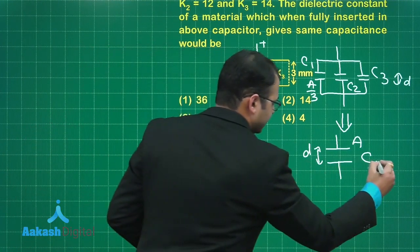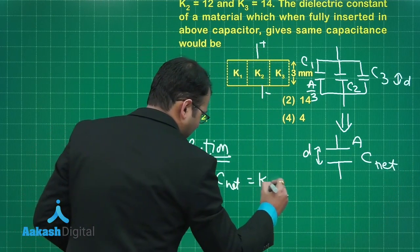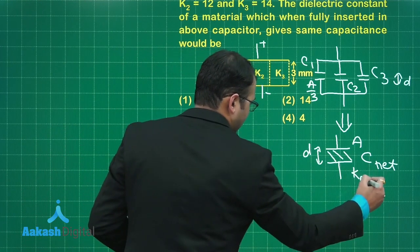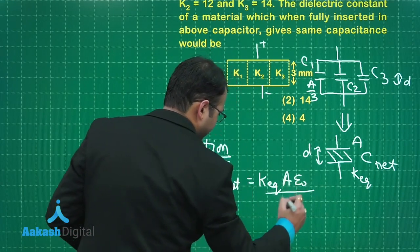Let's take this as C net. So C net we want would be K equivalent, which is filled by this dielectric K equivalent, into area epsilon 0 by D.